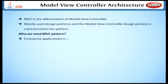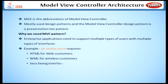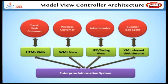Nowadays, enterprise applications need to support multiple types of users with multiple types of interfaces. For example, an online store may require an HTML interface for web customers, a WML interface for wireless customers, a Java Swing interface for administrators, and an XML-based web service for suppliers. As you can see, an application may need to handle various clients. In this case, we have to develop different applications, each one to support each type of client interface.